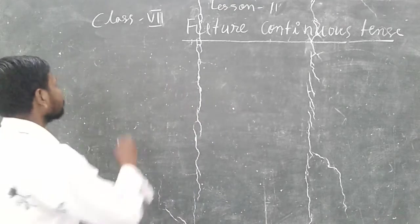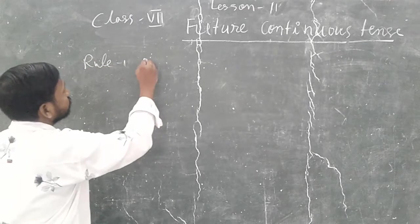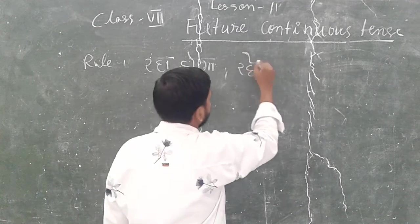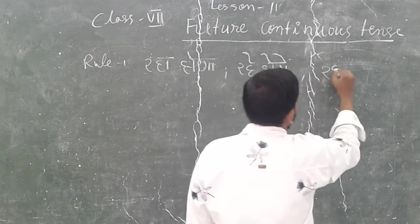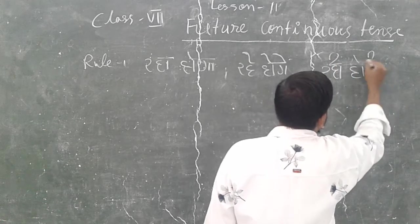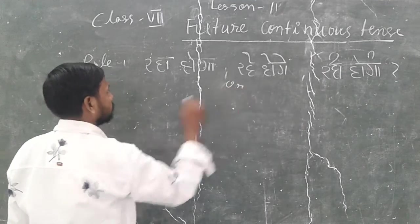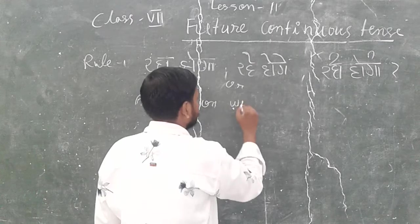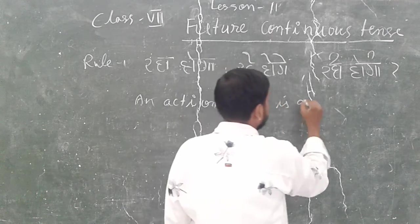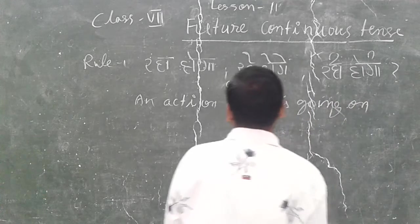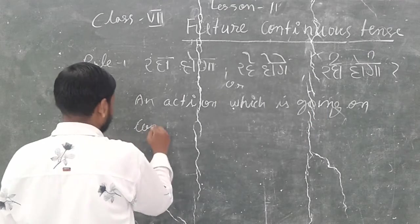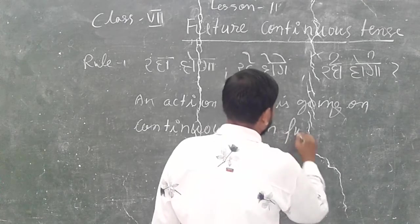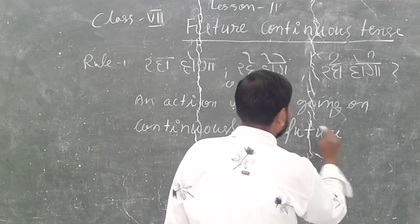Let us see some rules. Rule first: an action is going on continuously in the future — that is the key idea of future continuous tense.